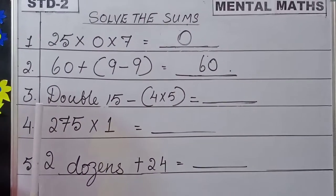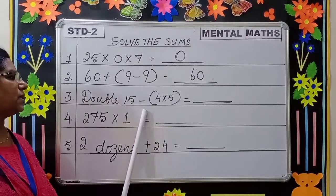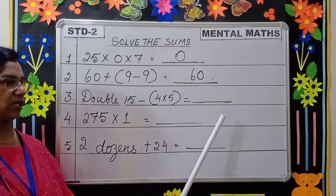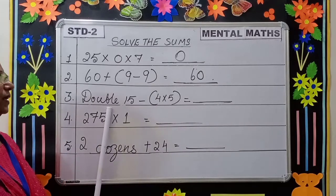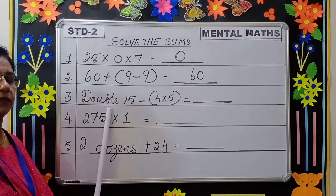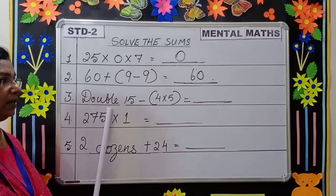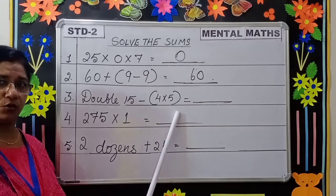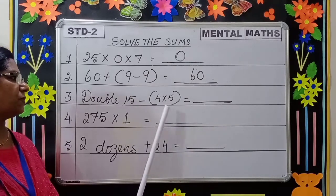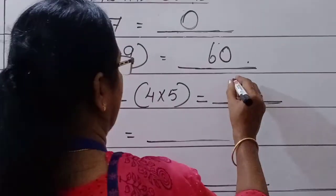Moving to the third question: double 15 minus 4 into 5 is equal to dash. Double 15 means 15 two times — 15 plus 15 is equal to 30. Now 4 into 5 is equal to 20. Now you will subtract 20 from 30 and you will get the answer 10.